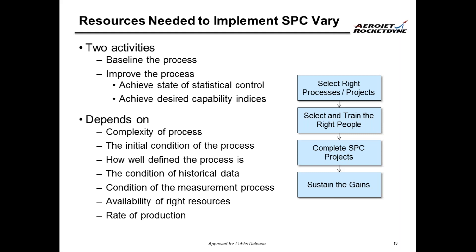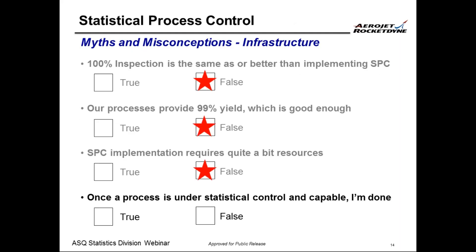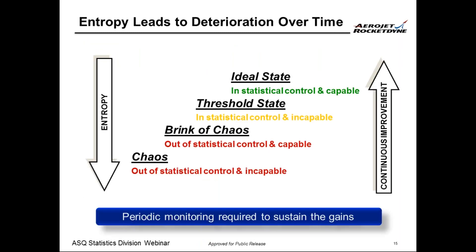The last misconception in this category is: once a process is under statistical control and capable, I am done. Processes have a natural tendency to migrate from an ideal state toward chaos because of the force of entropy, which leads to deterioration over time. That's why we need periodic monitoring to sustain the gains. Just like we need to clean our house periodically to keep it clean, we need to do periodic maintenance on our processes to sustain the gains.